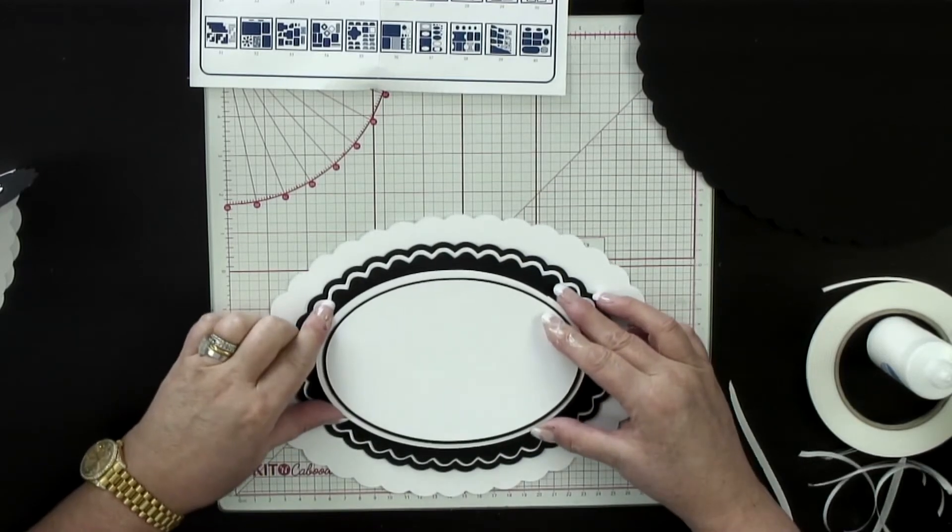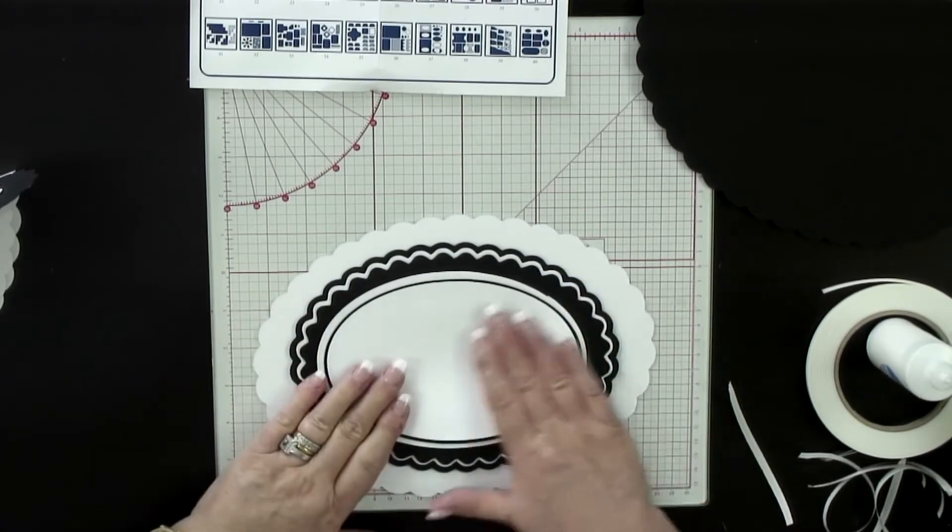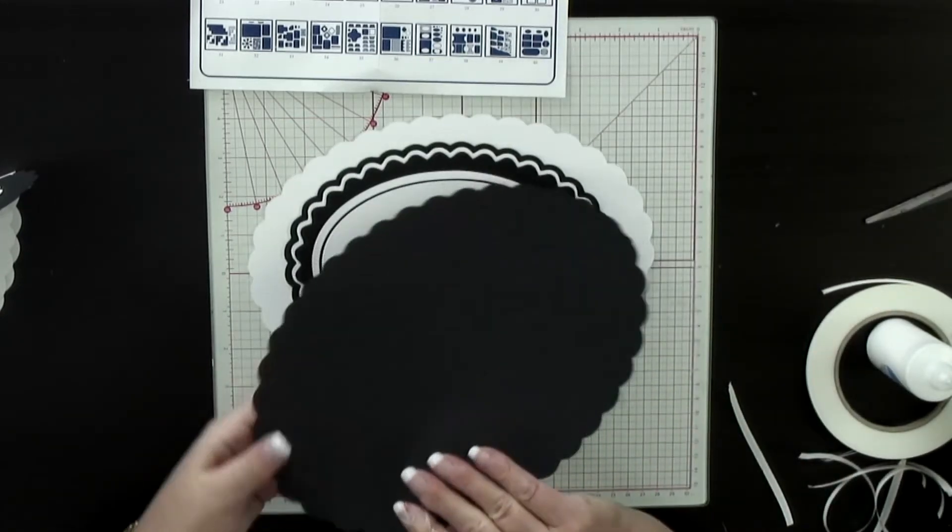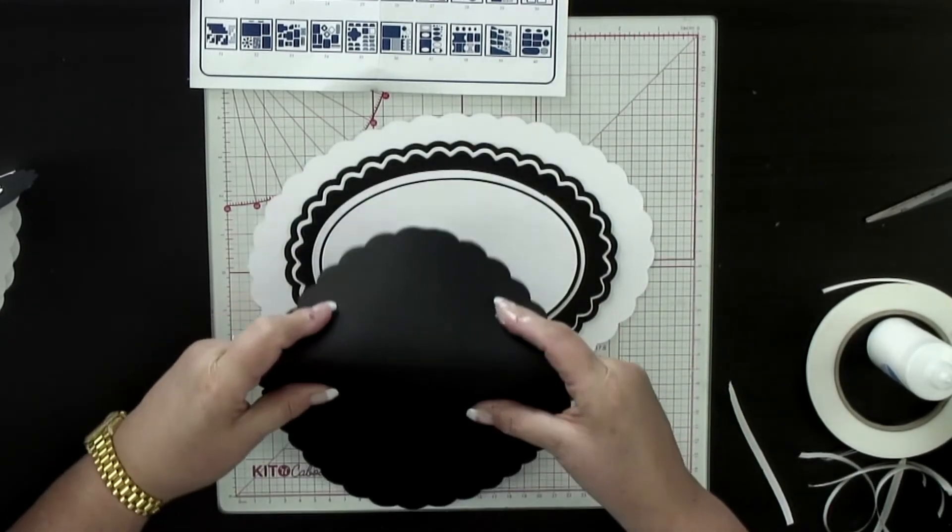So these are the layers that are going to go on the front and that's the main body of my card made up. This is the important part. So I've got a score line there, I've got a score line there and I've got a score line there.